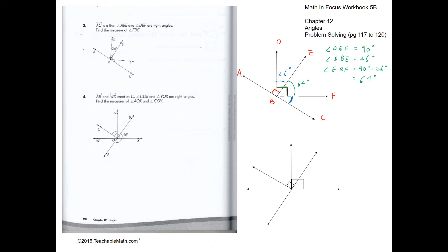We also know that ABE is a right angle. So angle EBF has to be part of that right angle as well. Angle EBF is 90 degrees, so therefore angle FBC will have to be 90 minus 64, which is 26 degrees.